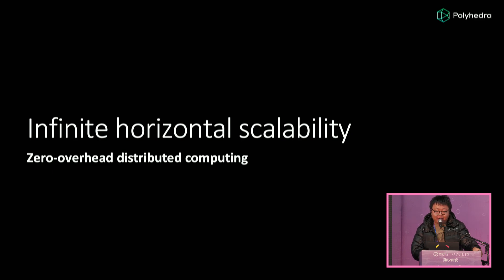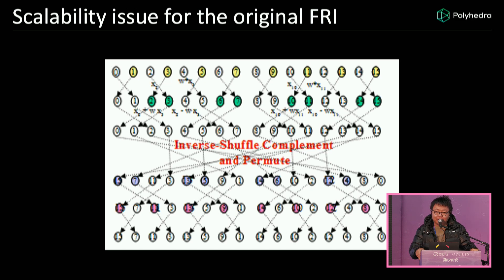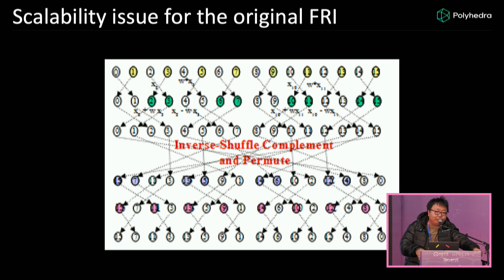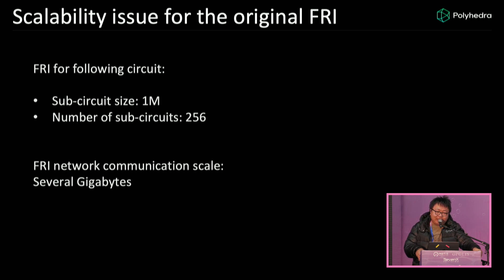Another nice property is we can infinitely horizontally scale — you can add many machines without any overhead. Let me explain why others cannot do this but we can. The Plonk protocol has a problem where it relies on FFT, and FFT itself has a distributed computing problem: in the middle of FFT there is linear-size communication between machines. In our experiment, for a sub-circuit of size 1 million with 200 machines, they communicate gigabytes of data if you use FFT or Plonk. This is not possible to decentralize — you can only place these machines in the same data center.